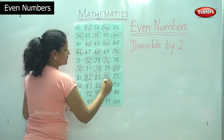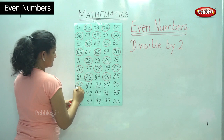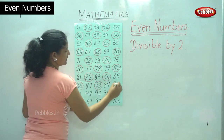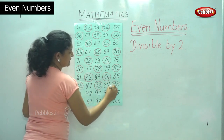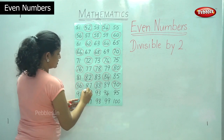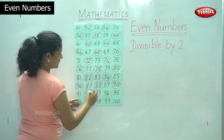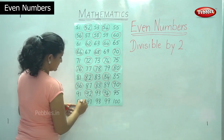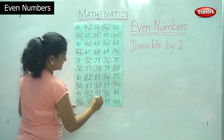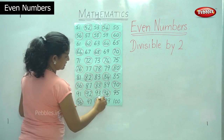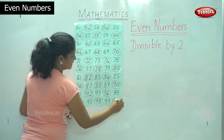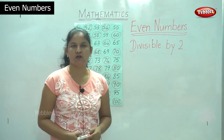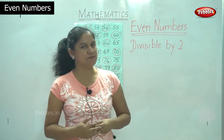Continuing, we have: 84, 86, 88, 90, 92, 94, 96, 98, 100. So these are all called even numbers — all the numbers that are divisible by 2.